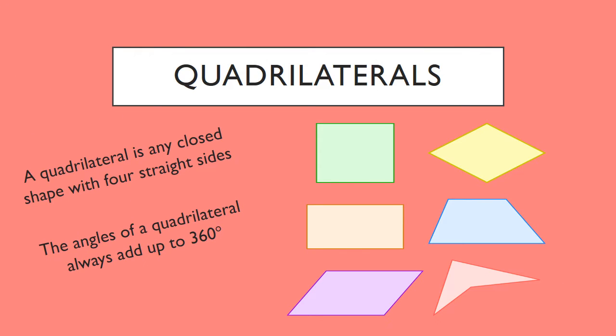Good morning, Grade 8s, and welcome back to Geometry with 2D Shapes. We are looking at quadrilaterals today. Something to remember is that 'quad' — like a quad bike — means four. A quadrilateral is any closed shape with four straight sides and also with four angles inside that quadrilateral.